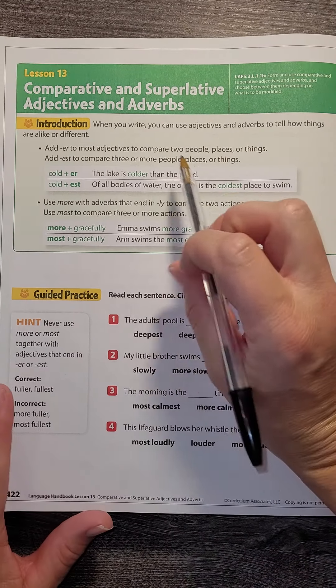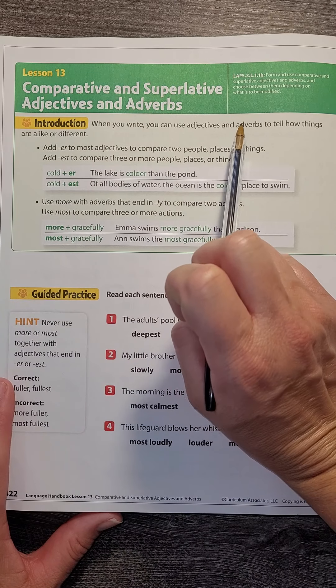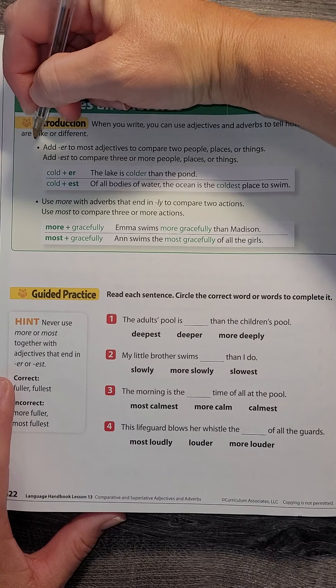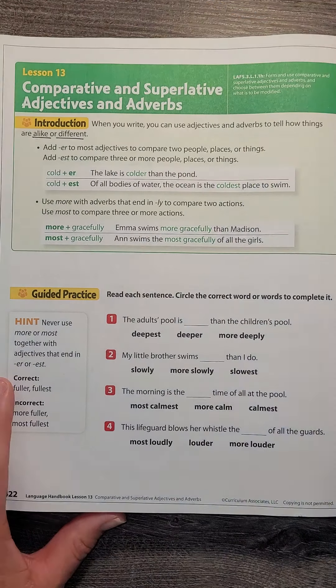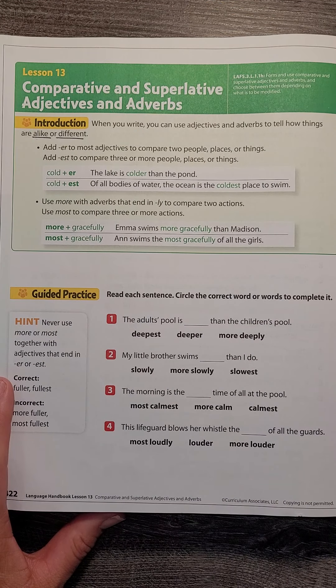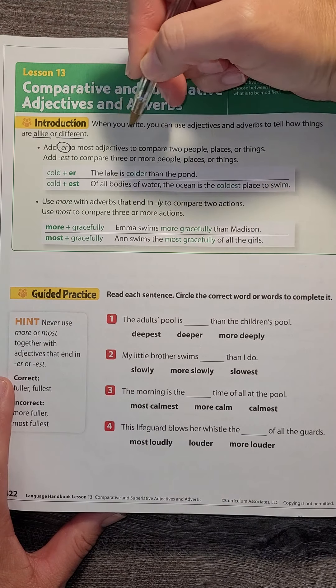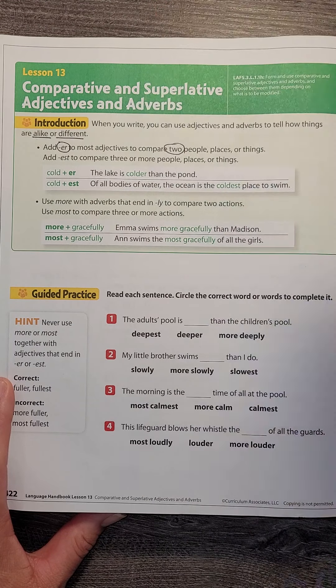First of all, when we write, we use adjectives and adverbs to tell how things are alike and different—comparing and contrasting. Most of the time we add -er to compare two things.